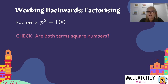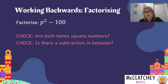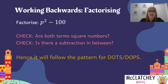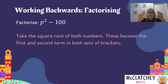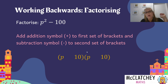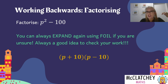Our check: are they both squared numbers? Yes. Is there a subtraction in the middle? Yes. So we know straight away we can put it into that form. Take the square root of the first number — square root of p squared is simply p. Take the square root of that second number — square root of 100 is 10, you can even do that on your calculator. Then remember you'll have the square roots in both sets of brackets with a plus in one and a minus in the other. So the answer is (p + 10)(p - 10). And if you want to check your work, just expand using FOIL and verify you get back to the same place.